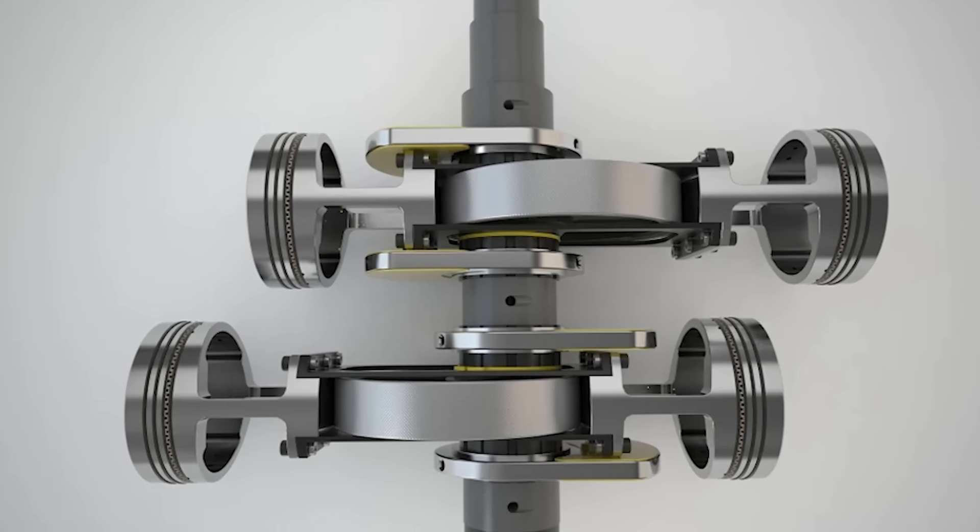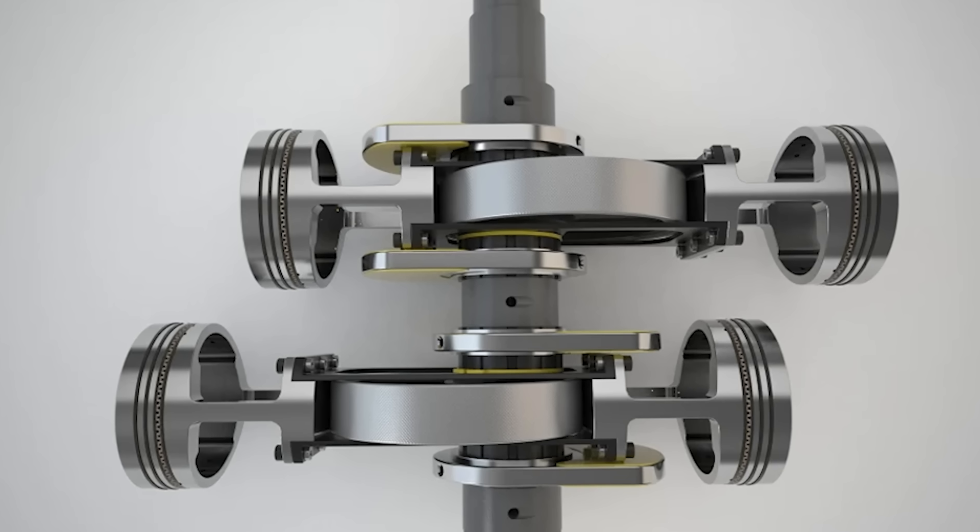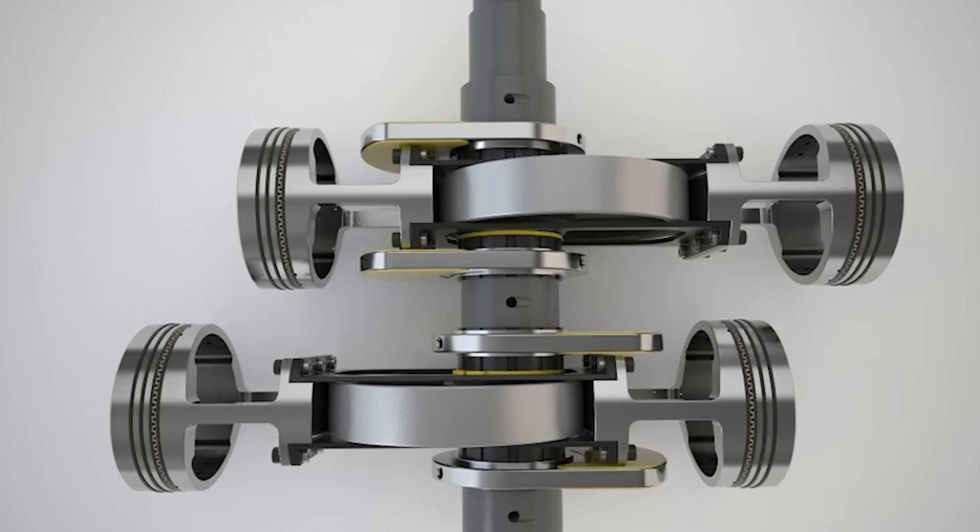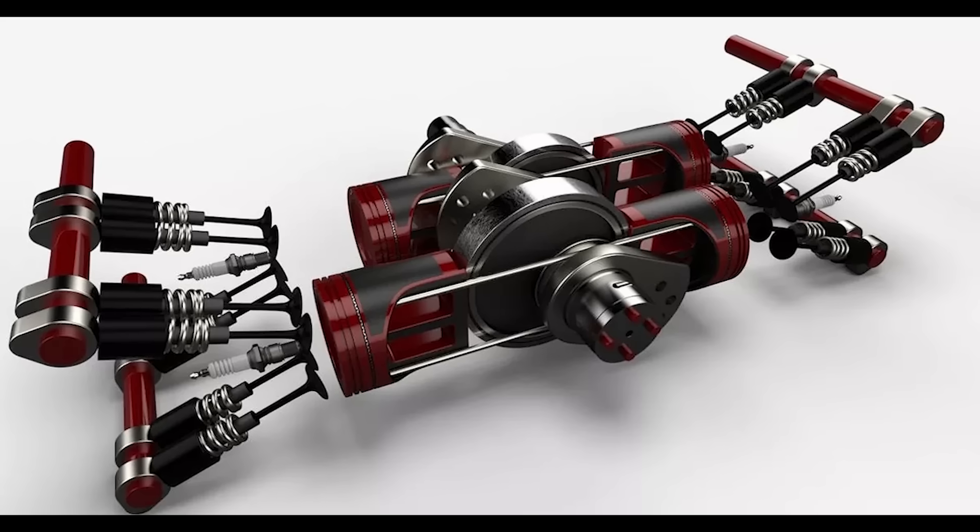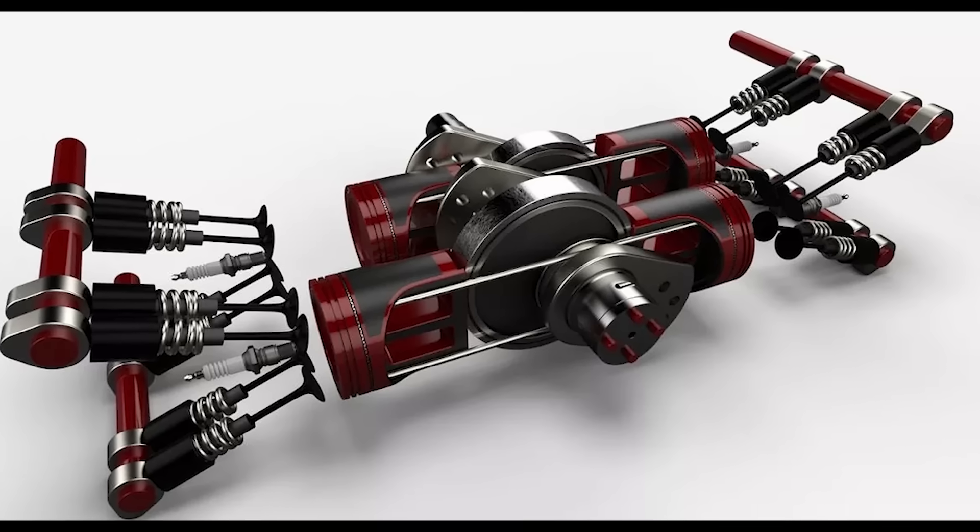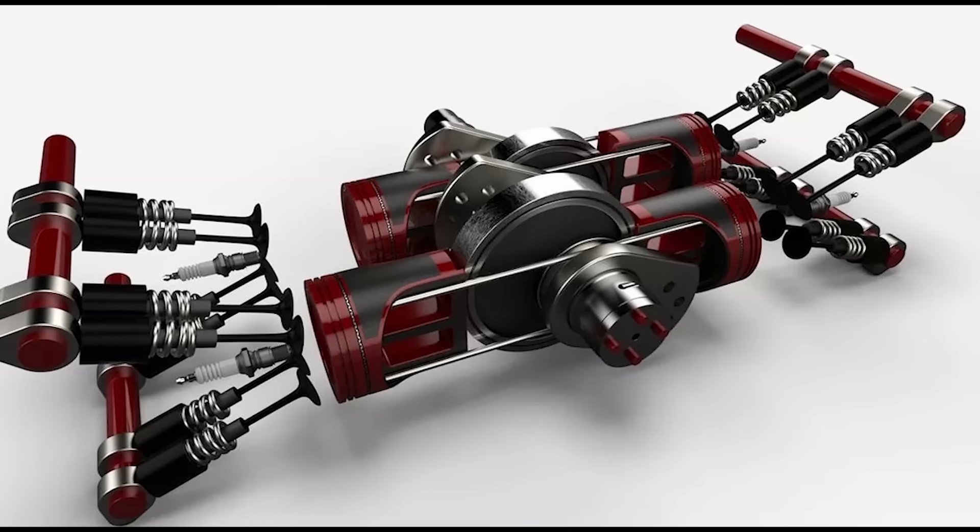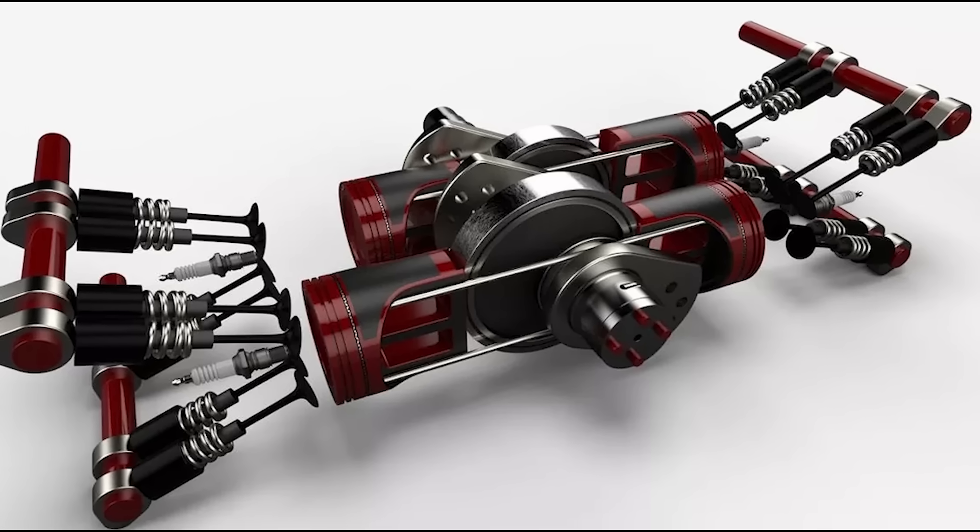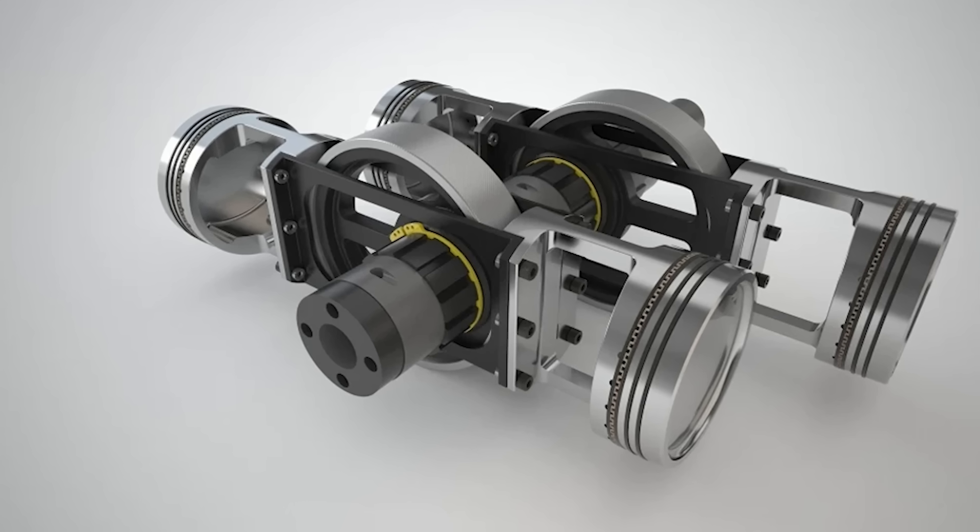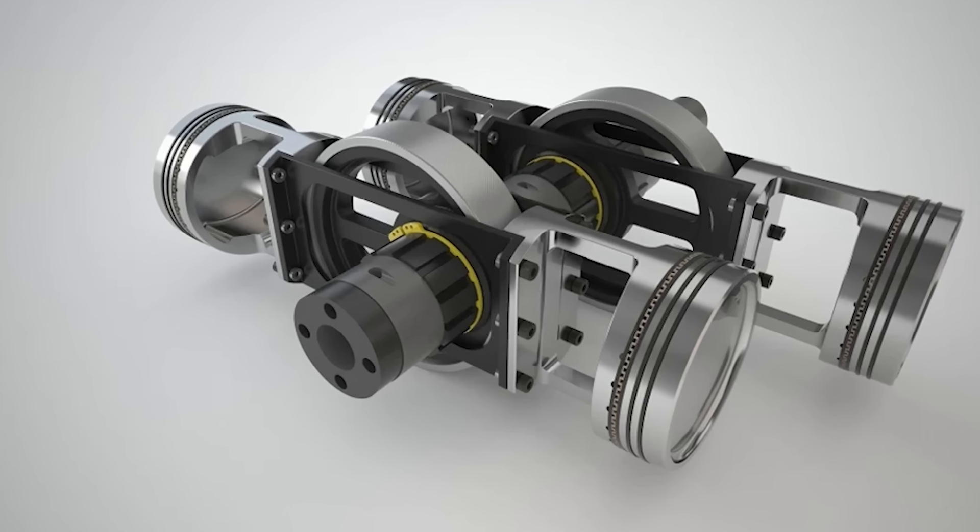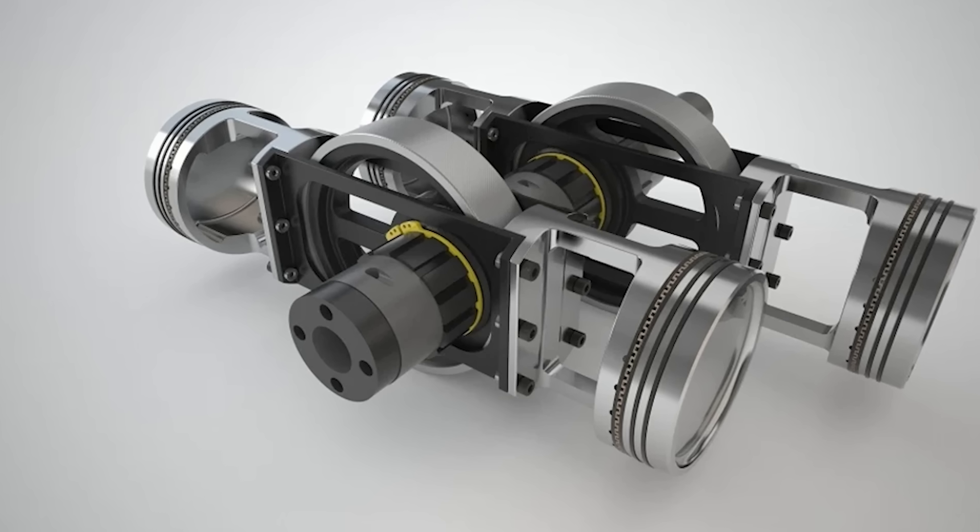You see, his concept flips the old formula on its head. Instead of a crankshaft with rods, Wasey designed a large disc mounted eccentrically, or off-center, on a main shaft. The pistons push directly on the edge of this disc. By doing so, the piston's linear motion turns the disc, which then rotates the main shaft. This means no connecting rods, no offset crank throws, and importantly, no sideways force pushing the piston against cylinder walls.